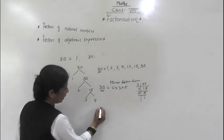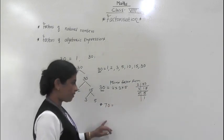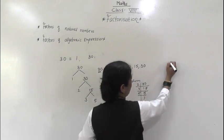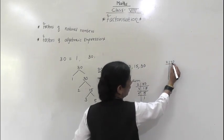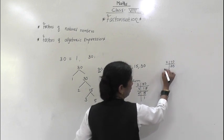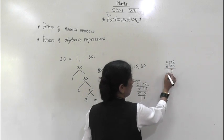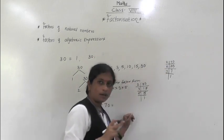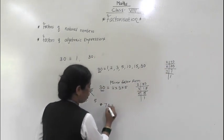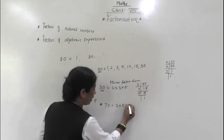Similarly, many numbers can be expressed in prime factor form. For example, take 70. So what are the factors of 70? In prime factor form: 70 means 2 × 35, then 5 × 7 = 35, and 7 × 1 = 7. So 7, 5, and 2 are all prime numbers. The prime factor form of 70 is 2 × 5 × 7.